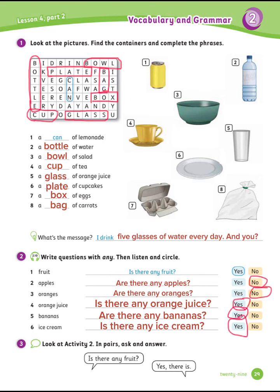Exercise number 3: Look at Activity 2 and ask and answer. Let's read the example: Is there any fruit? Yes, there is. Have a similar conversation shown in the example with your partner in class.